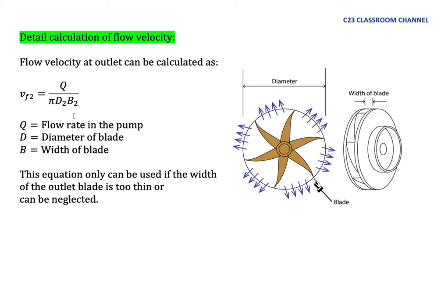When we calculate vf2 equals Q over πD2B2, we imagine that the water will flow like a source, meaning from one source here the water will flow radially. Because the tip here will create a very thin area at the exit, the area that water flows out is actually 2πr, the perimeter of this impeller, times the height.